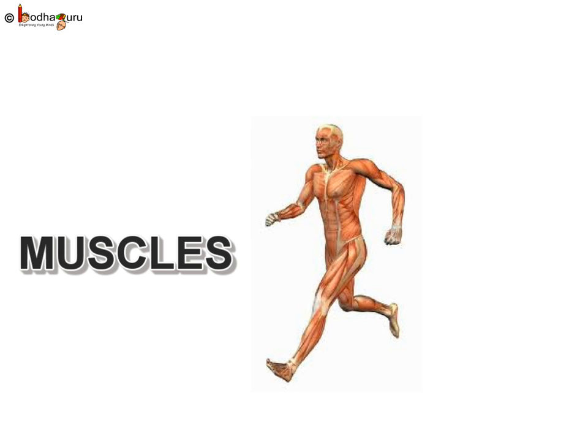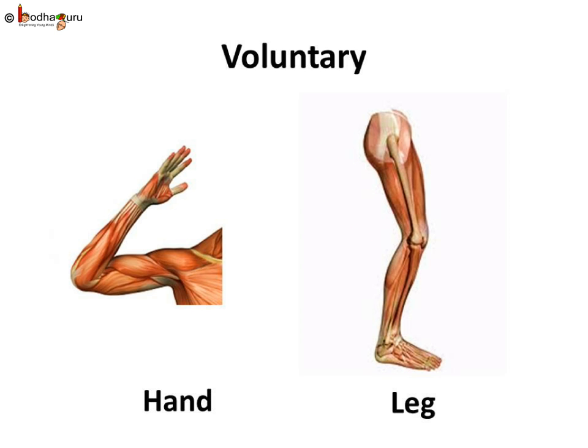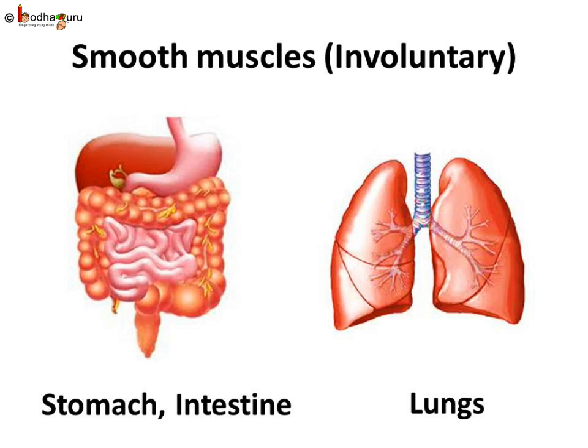Each muscle causes a particular movement. Like bones, there are different types of muscles too. The type of muscle depends on whether the muscles are attached to the bones or not. Muscles which are attached to bones are called skeletal muscles. They are in our control, so also known as voluntary muscles. Involuntary muscles are the muscles which are not in our control, like cardiac muscles and smooth muscles.